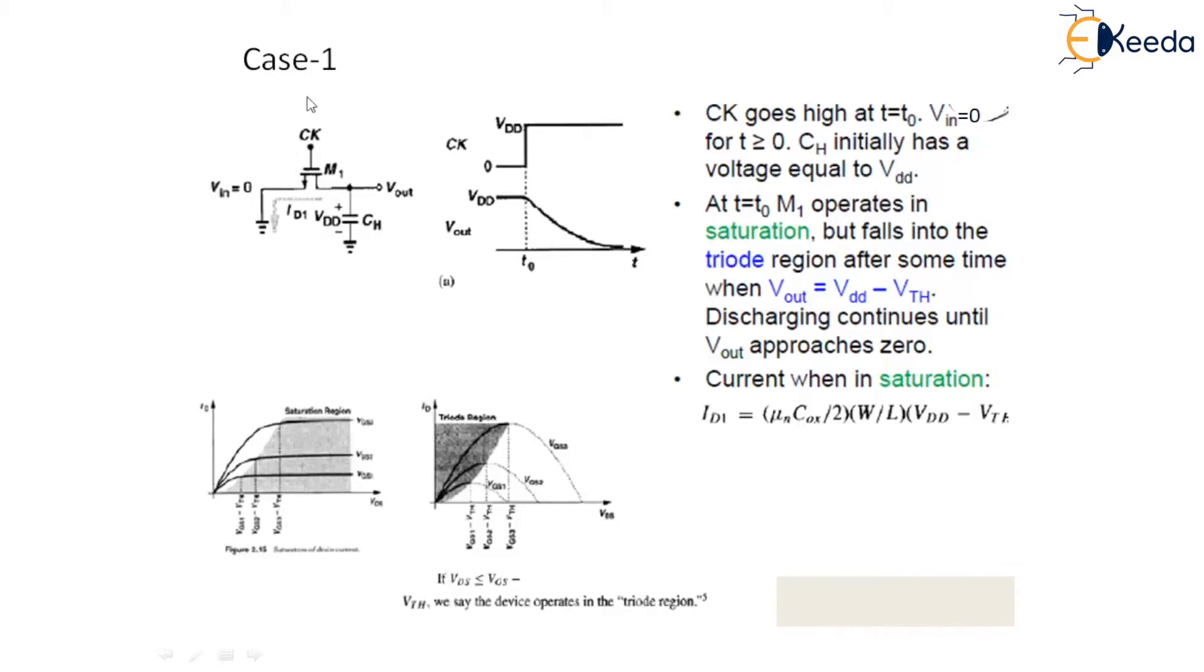And the device nevertheless continues to discharge this capacitor until Vout approaches zero. We note that for Vout less than 2 VDD minus VTH, the transistor can be viewed as a resistor having a resistance of Ron equals to 1 upon μn Cox W by L 2 VDD minus VTH. Now we consider these are our characteristics that how the transistor operates in triode and how it operates in the saturation region.